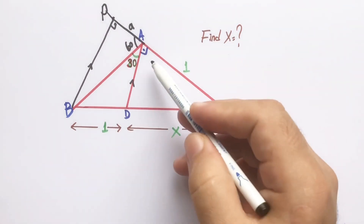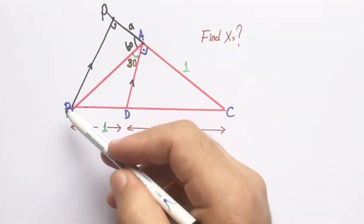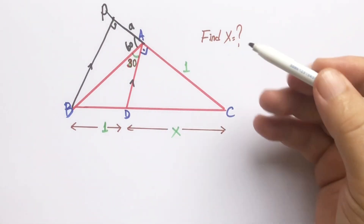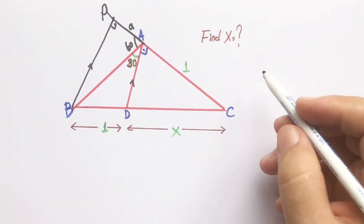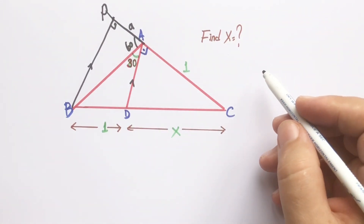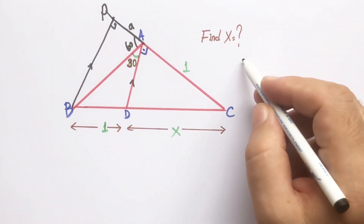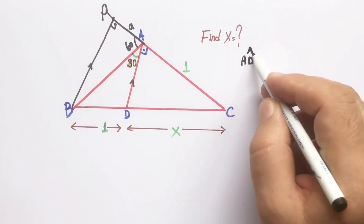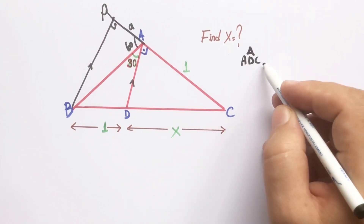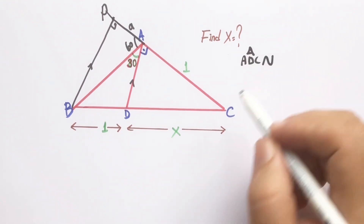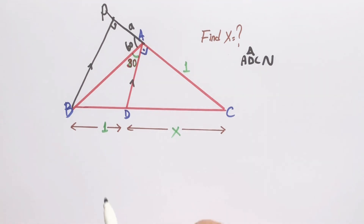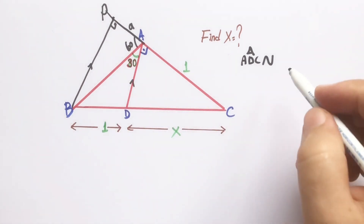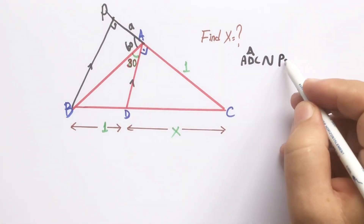If you notice, we get two similar triangles. The ADC triangle and the PBC triangle are similar.